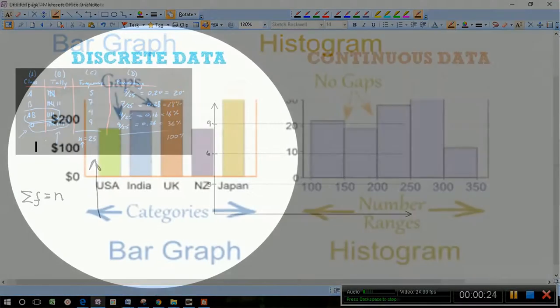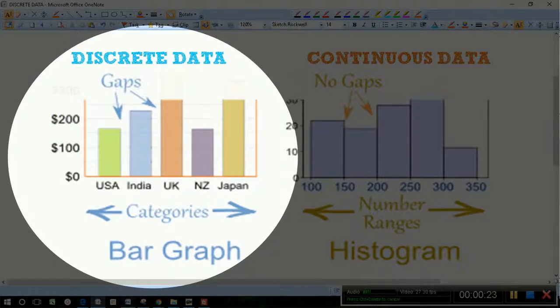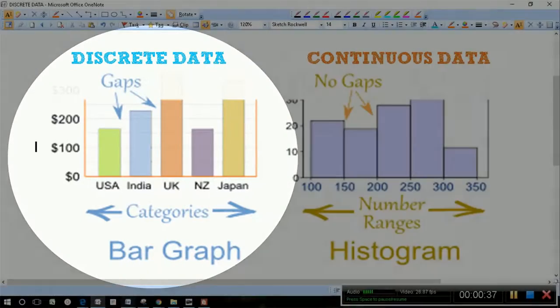Where we have categorical data, we're going to be able to use a bar chart or a bar graph. Note that there are gaps between the bars and that's fine because there are gaps between the categories, or rather I should say there's no set line or difference between them.